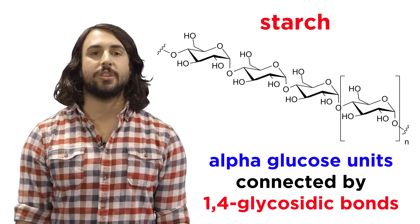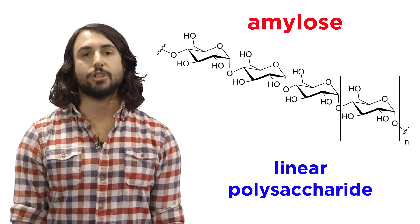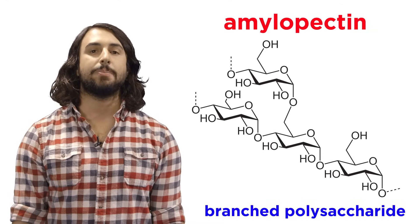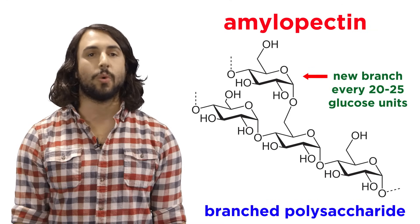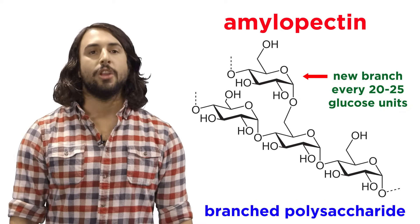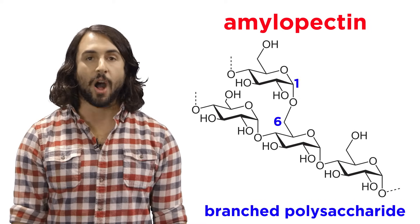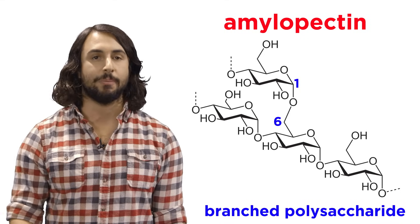In addition, starch is comprised of amylose, starch molecules that are linear, and amylopectin, which is the same as amylose except it has branching every 20 to 25 glucose units. The branching will occur between carbon-6 of one glucose and carbon-1 of another, and another chain initiates from there.